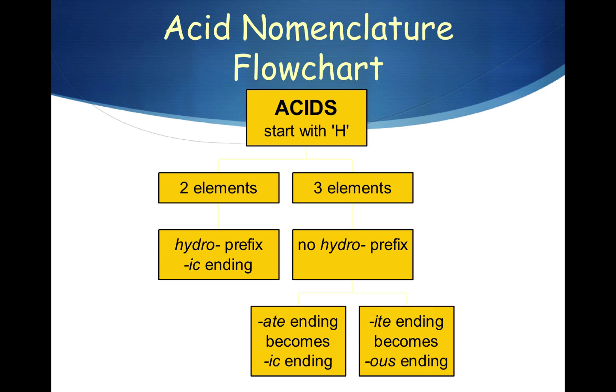Naming acids. Now there are two types of acids. On the left side, we see that some acids only have two elements. They all begin with the prefix hydro and end in -ic. So for example, when you hear the name hydrochloric,